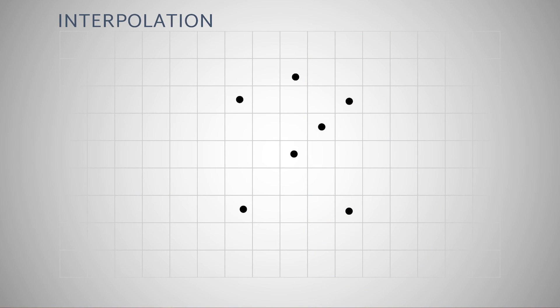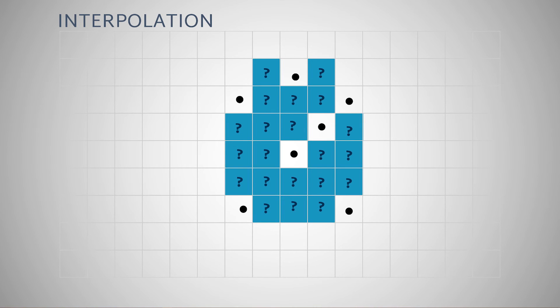Interpolation is a process of estimating unknown values that fall between known values. Like density, interpolation also allows you to create a surface from a series of known locations and values. Unlike density, interpolation tries to predict real values at specific locations.